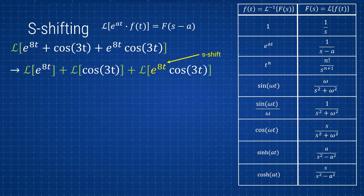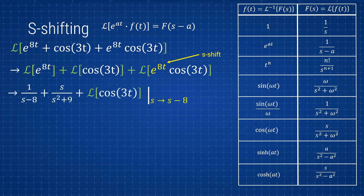...once we write the Laplace transform of that function of t — in this case a cosine — we write it the same as usual but we shift the result: every s at the end gets shifted. For e^(at) the table gives us 1/(s−a), and for cosine it's s/(s²+ω²). So for the first term we have 1/(s−8), and for the second term we have s/(s²+9).